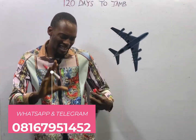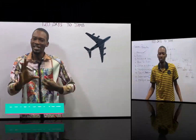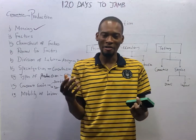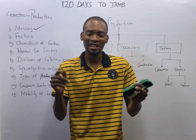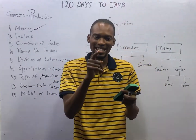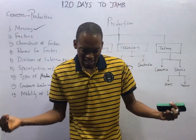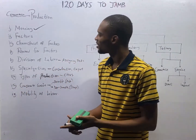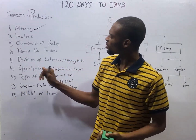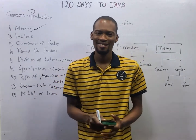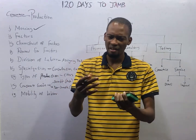Ladies and gentlemen, it is time to take off. This is episode 9 of the 120 Days to Jam Commerce with Flash Isaac. In this episode, we shall be taking a look at the factors of production, their characteristics, and their reward.